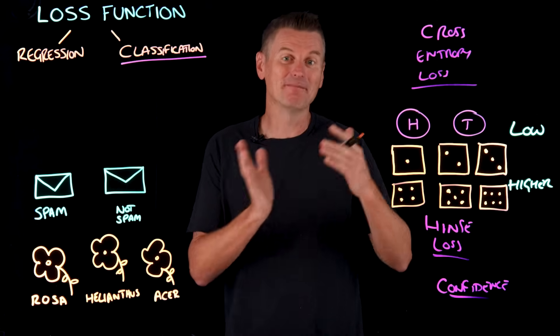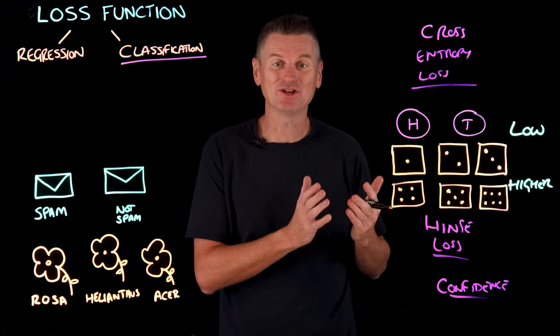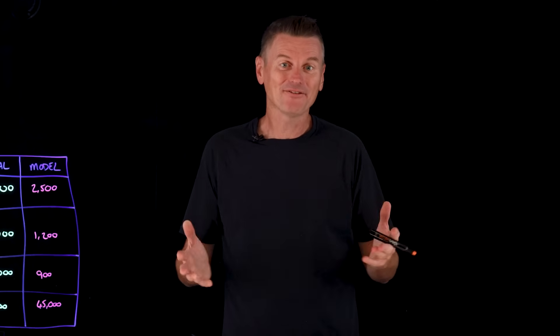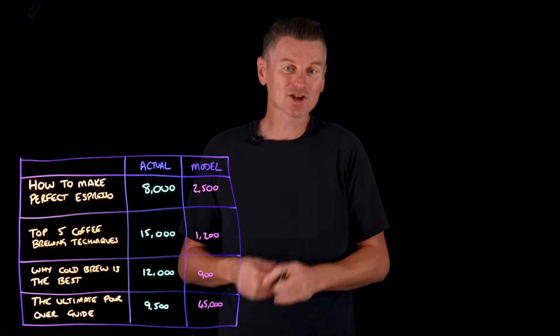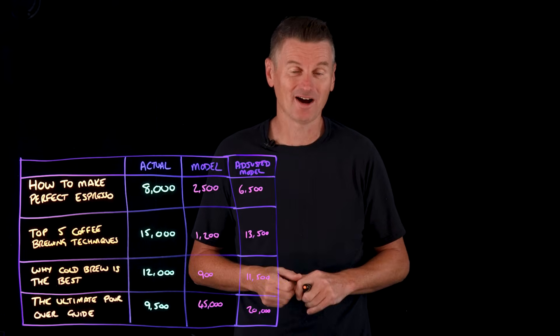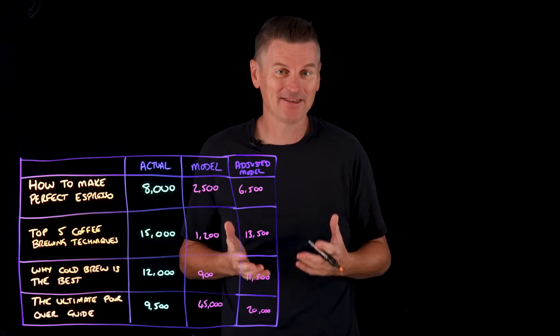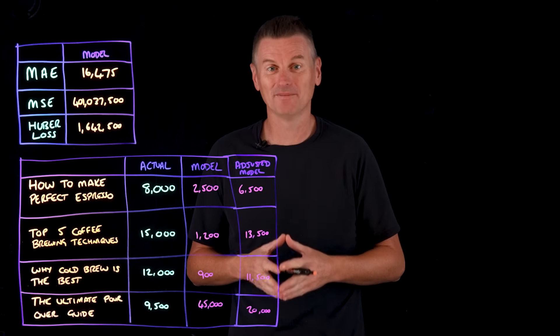It tells the model how well it's performing and where it needs to improve. The lower the loss, the better the model's predictions align with the true outcomes. After adjusting the YouTube prediction model, we get a new set of forecasts, and we can now compare the loss functions between the two models.